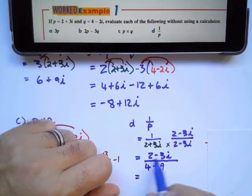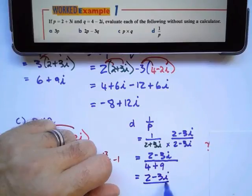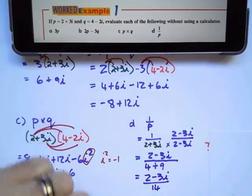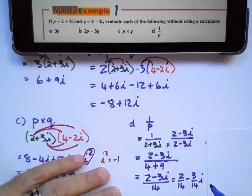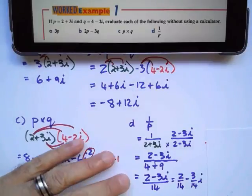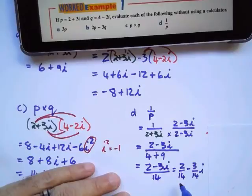This equals 2 minus 3i over 13, which is the same as 2 over 13 minus 3 over 13i. Which you can simplify if you really want to, and you're going to simplify that as 1 over 7 minus 3 over 14i.